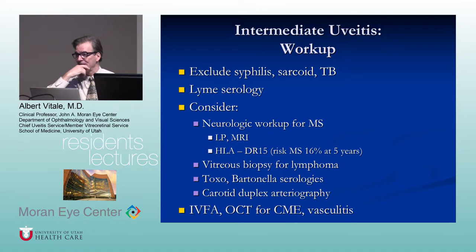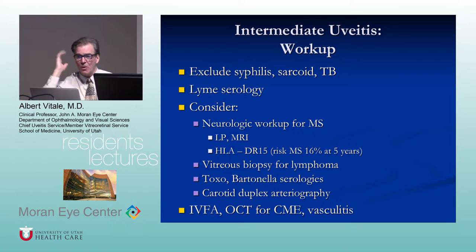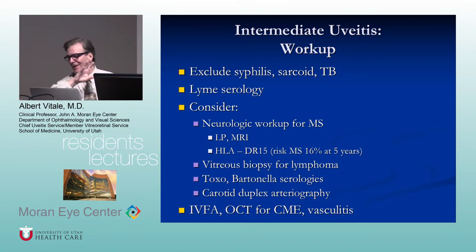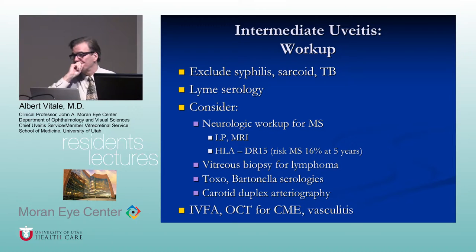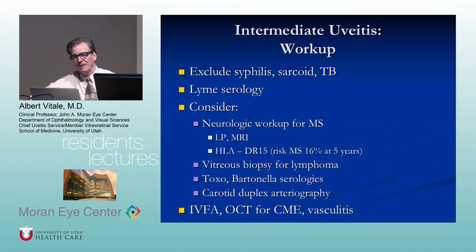The issue is whether to scan everybody — most people don't. Even if you scan them and find small lesions, neurologists often won't treat. When taking a history from patients with intermediate uveitis, always ask about signs and symptoms of MS: paresthesias, bladder-bowel incontinence, and optic neuritis. Ask again at each follow-up visit.